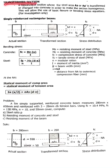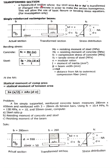Let's have another topic: the transform section. In the transform section, instead of steel, you transform it into concrete so that you can have a homogeneous beam which is all concrete. A transform section is a hypothetical section where the area of steel, As or As-prime, is transformed or changed into concrete in order to make the section homogeneous. This allows the use of the basic flexure or bending stress equation for investigation only.